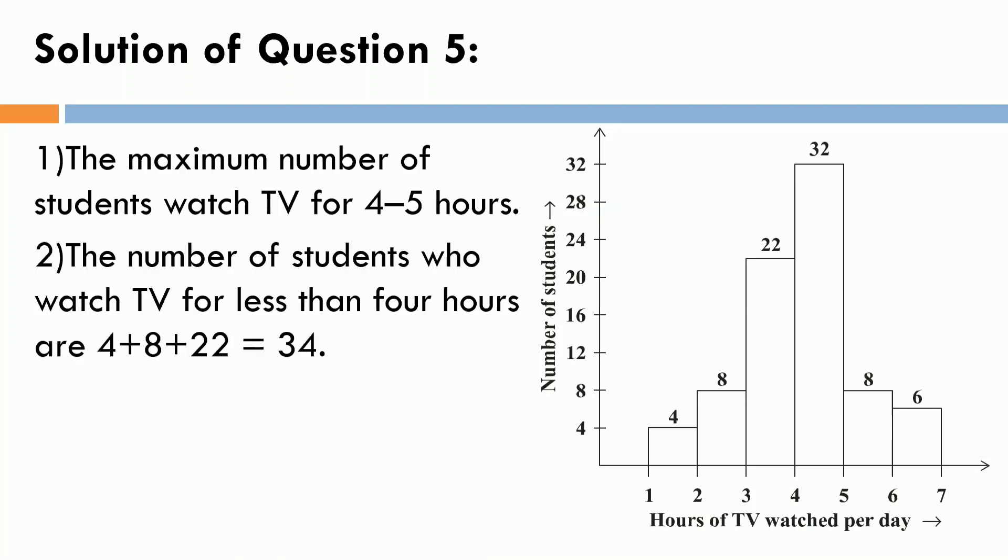Next is, the number of students who watched TV for less than 4 hours. Less than 4 hours means, all the bars you have to take into consideration, which are lying on the left-hand side of 4 hours. So, here, for 3 to 4 hours, 22 students. For 2 to 3 hours, there are 8 students. And for 1 to 2 hours, there are 4 students. So, taking the sum of all these 3 numbers, 4 plus 8 plus 22 is equal to 34. So, the number of students who watched TV for less than 4 hours are 34.